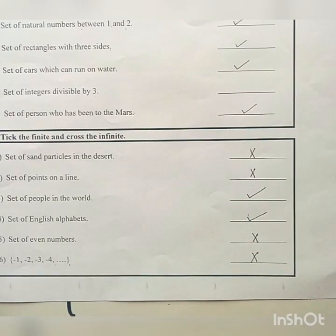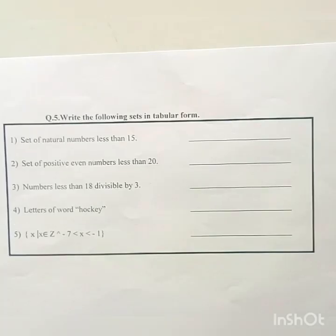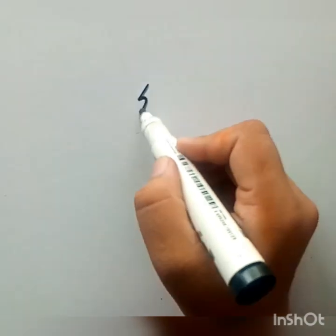Next, question number 5 is write the following set in tabular form. First of all, let us see what is tabular form. The tabular form is a form in which we write a set in digits numbers.